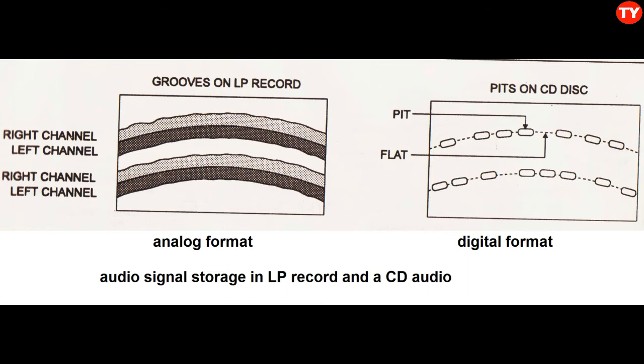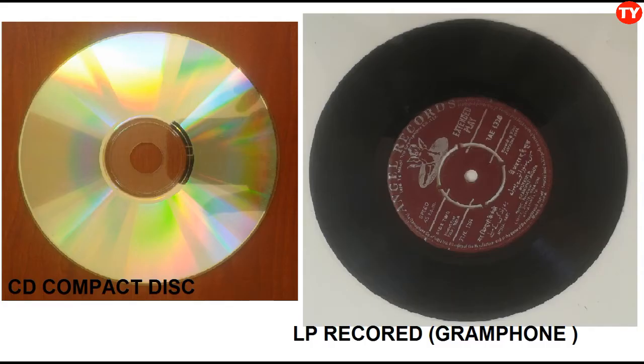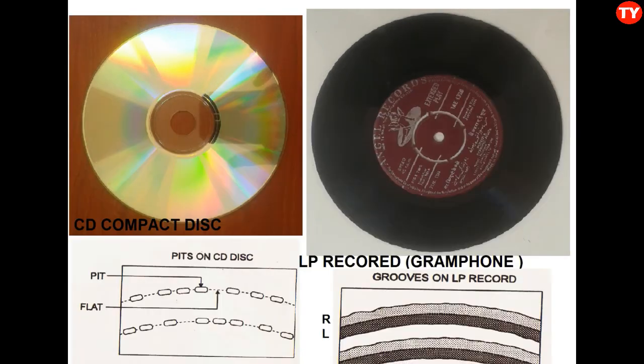The speed of disk rotation in CDs is around 450 to 550 RPM. In LP records, the speeds are 33, 45, and 78 RPM, depending upon the size of the record.